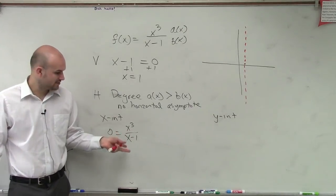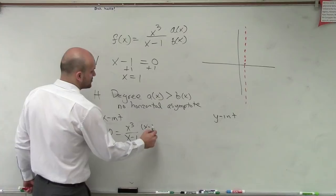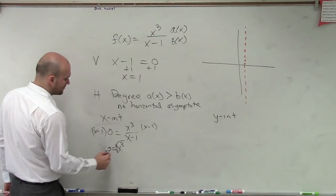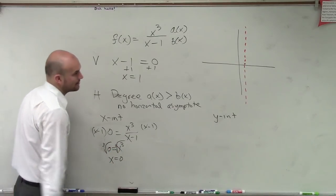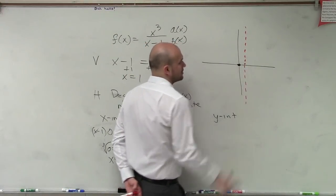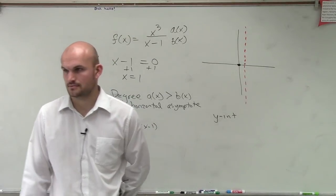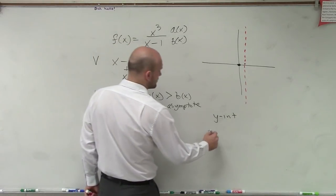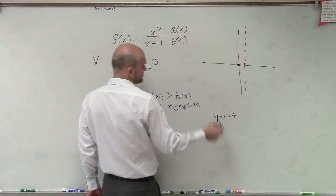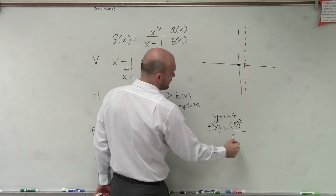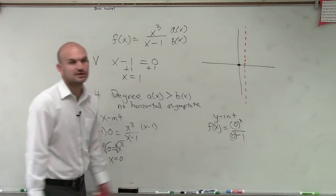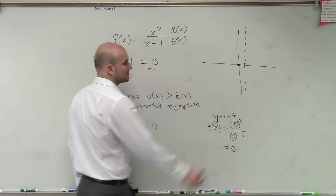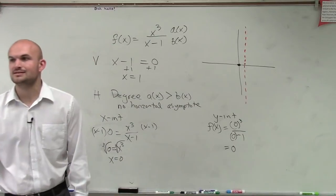To solve for x, we get x minus 1 off the bottom by multiplying both sides by x minus 1. Therefore, 0 equals x cubed. Taking the cube root of both sides, x equals 0. So the x intercept is at 0. For the y intercept, we plug in x equals 0: 0 cubed over 0 minus 1 equals 0. So our x and y intercepts both cross at (0, 0).